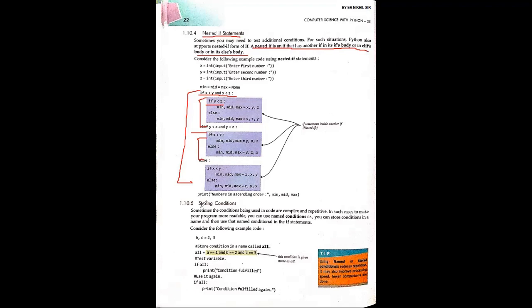Stored condition: you just store different conditions in one variable. For example, a = 1, and the condition b == 1. Single equal to is an assignment operator and double equal to is a comparison operator. You put conditions into a variable and then use that variable in your if statements. In this way, you can store conditions.